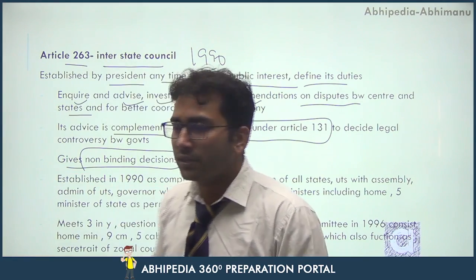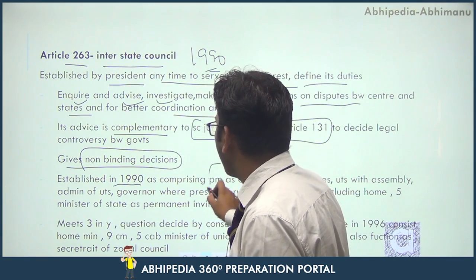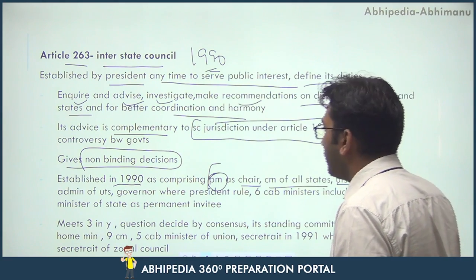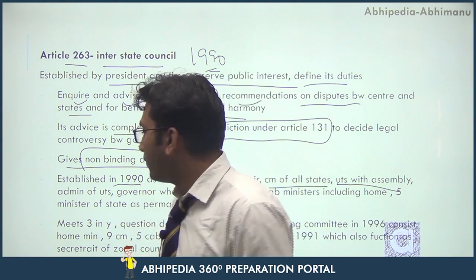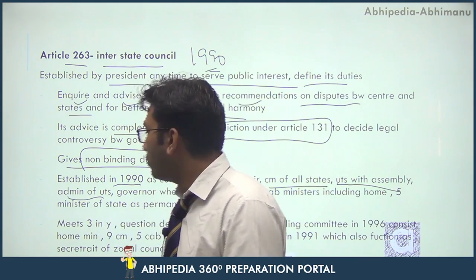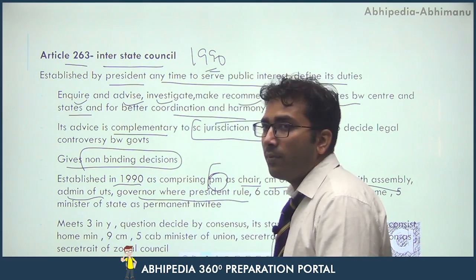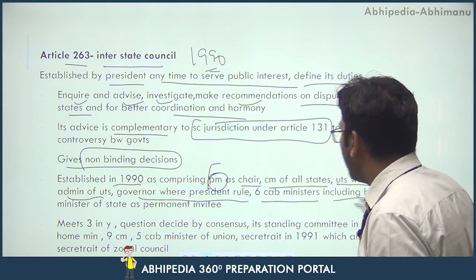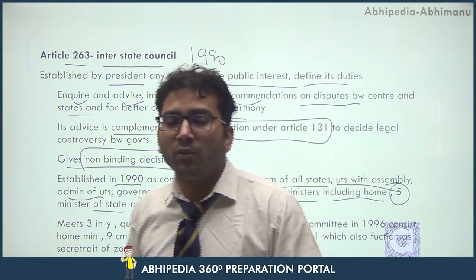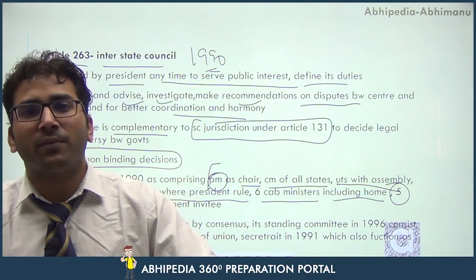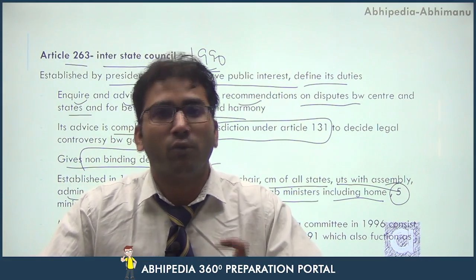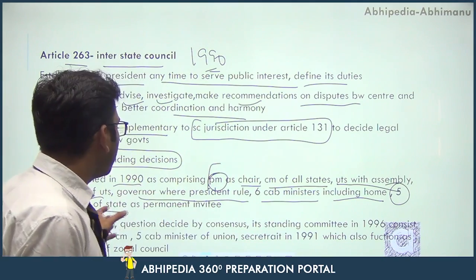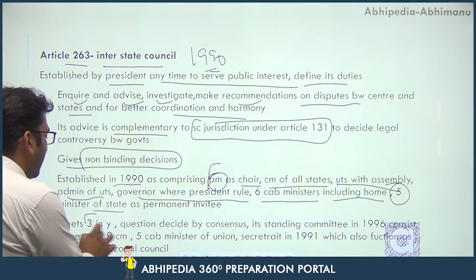The Interstate Council was established in 1990. It comprises the Prime Minister as chairman, Chief Ministers of all states, Chief Ministers of UTs with assemblies like Delhi, Puducherry, and Jammu & Kashmir, administrators of UTs like Chandigarh, governors where President's Rule is applied, six cabinet ministers including the Home Minister, and five Ministers of State as permanent invitees by the chairman. It meets three times a year.